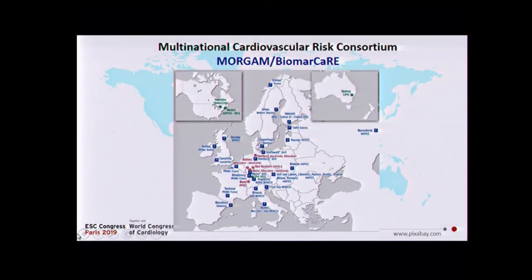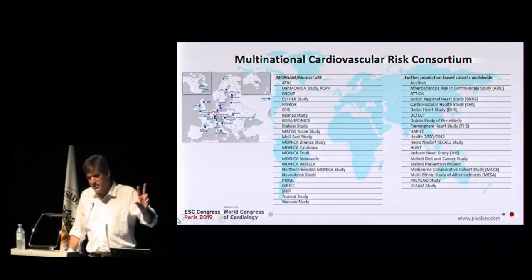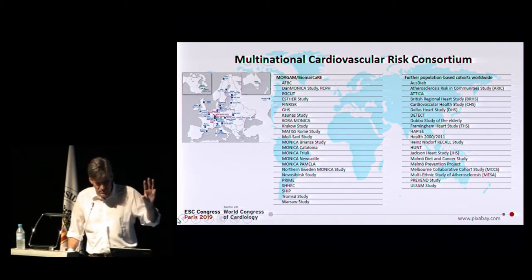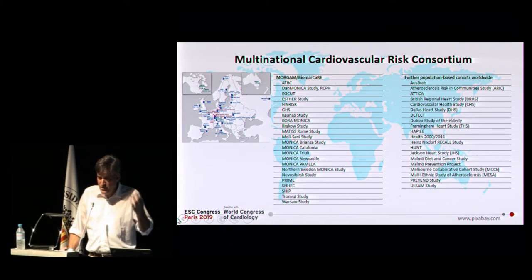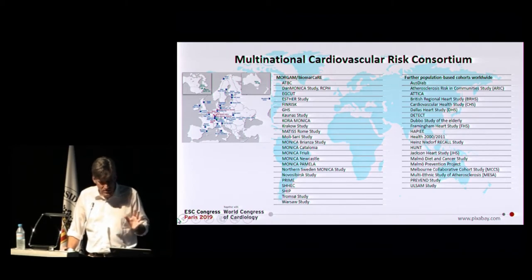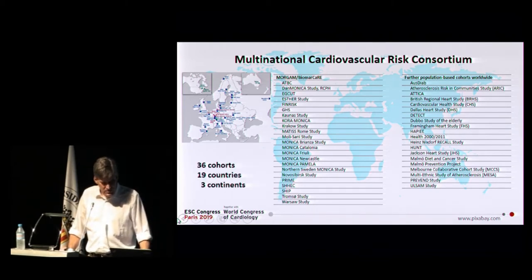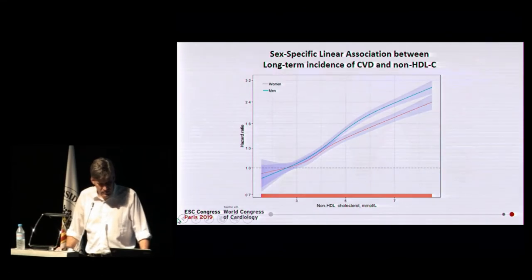I give you a second example. Now we go to the population level. We harmonized population-based data around the world — this was based on three European projects starting in 1998, now a fourth European project within Horizon 2020. This is a harmonization of mostly all available population-based cohorts in Europe, with the big effort to integrate the US, Australia, and now Asia and African cohorts, to come up with a global cardiovascular risk consortium: 36 cohorts, nearly 20 countries, and three continents so far.